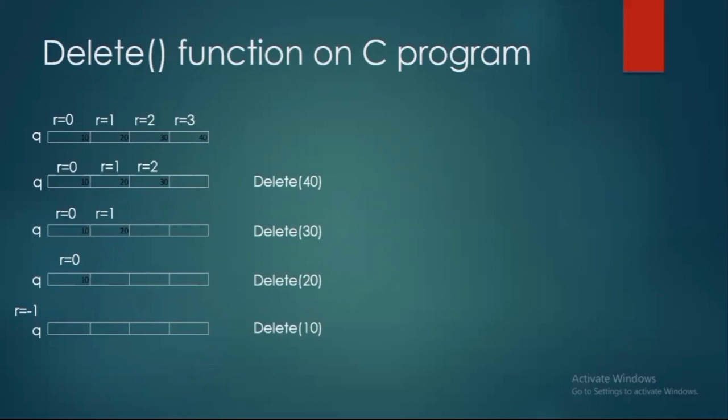I have displayed the format in a certain way because most students get confused that stacks and queues operate similarly. In stacks, the delete operation starts from the downward direction - first 10 is deleted, then 20, 30, 40. But in queues, it is first in first out: the element first inserted will be deleted first. A queue is a data structure used to store elements and delete them whenever needed. We use the insert function to insert and the delete function to delete.